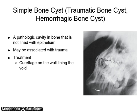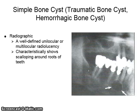The simple bone cyst, or traumatic bone cyst, also known as hemorrhagic bone cyst, is a pathologic cavity in bone that is not lined with epithelium. It may be associated with trauma. It is treated by curettage of the wall that lines the void. Radiographically, it is a well-defined unilocular or multilocular radiolucency, characteristically showing scalloping around the roots of teeth.